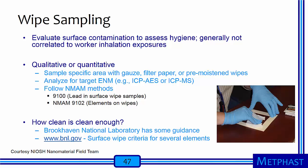Finally, NIOSH recommends wipe sampling to evaluate surface contamination. Although these measures are generally not well correlated with worker inhalation exposures, they provide a way to assess hygiene and potential dermal exposure. Methods include gauze, filter paper, or pre-moistened wipes used to sample a predetermined area. These samples are typically analyzed by ICP methods such as NMAM Method 9100 for measuring lead in surface wipes, or NMAM Method 9102 for measuring elements on wipes. The question is, how clean is clean enough? Brookhaven National Laboratory has provided some guidance and gives surface wipe criteria for several different elements.